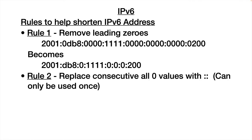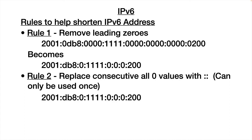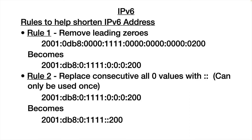The second rule is that you can replace a set of consecutive all-zero values with two colons right next to each other — basically remove them. The gotcha is this can only be used once, because if we did it twice and eliminated two separate groups of zeros, there's no way to tell how many zeros were in each group. So you look for the most zeros in a row and apply rule 2 there. IP version 6 addresses are going to be a little more difficult to communicate or remember than IP version 4 addresses.